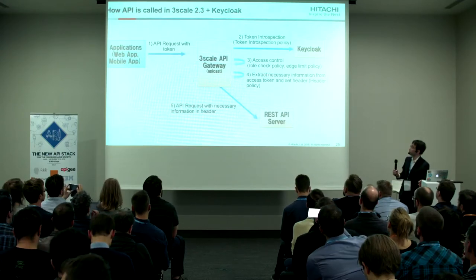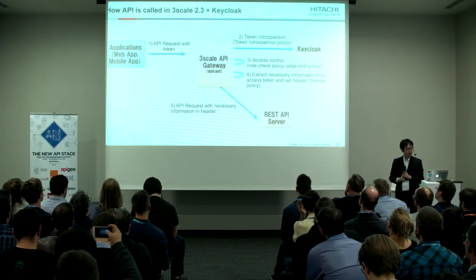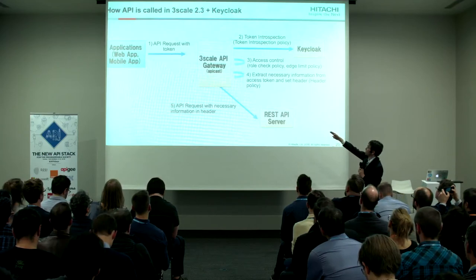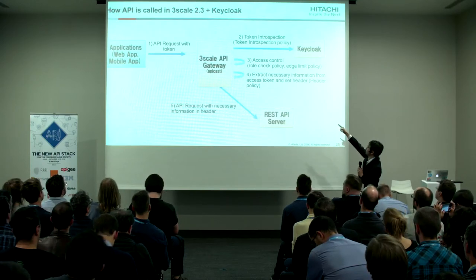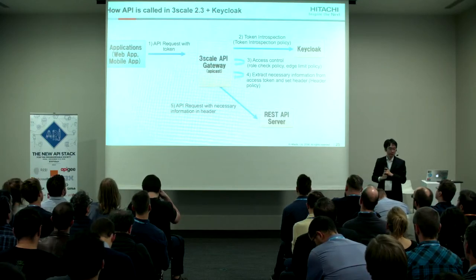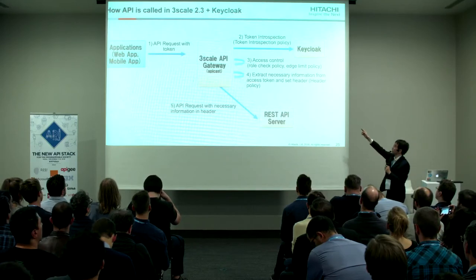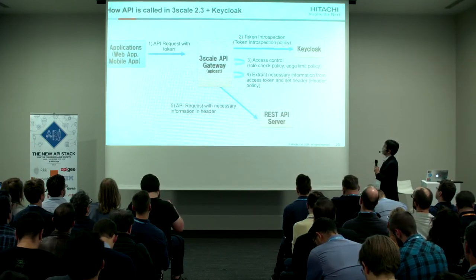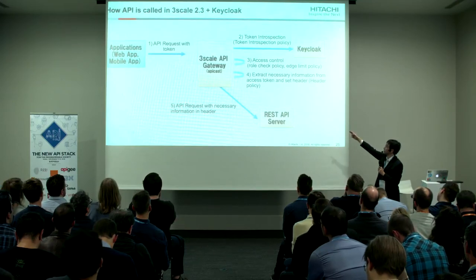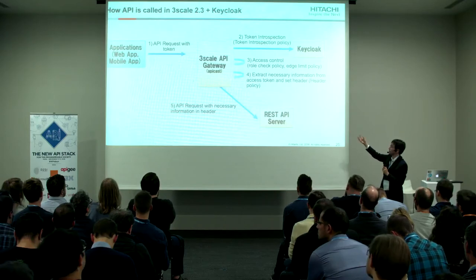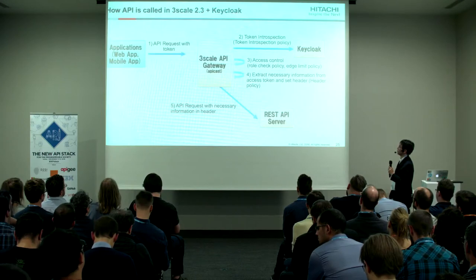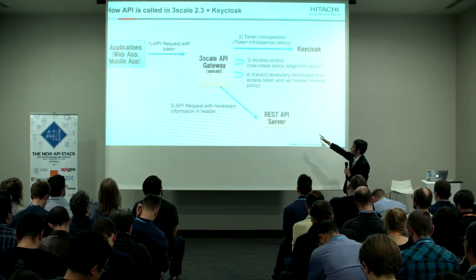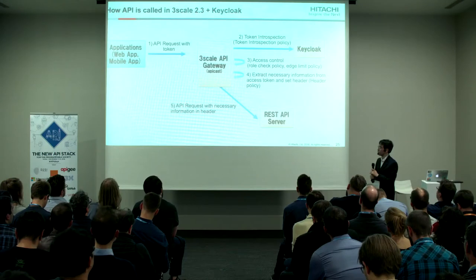This is how an API is called in the latest 3Scale. First, the application calls the API to the 3Scale API gateway. Token introspection is called to verify that the access token is valid. Next, access control is processed in the role-check policy and edge limit policy. Then the necessary information is extracted from the access token and set in the header. Finally, the 3Scale API gateway calls the back-end REST API server with the necessary information in the header.